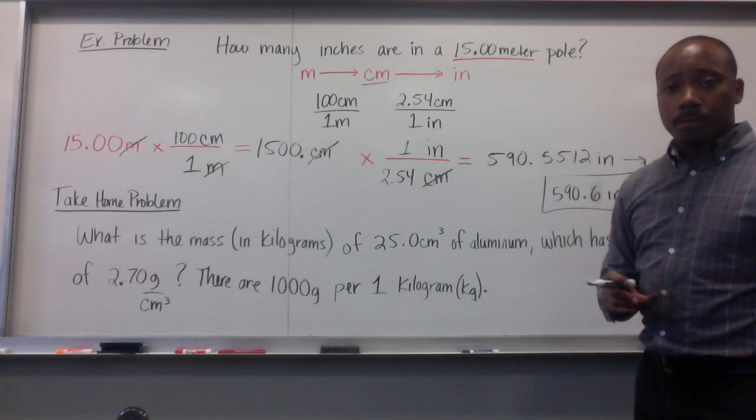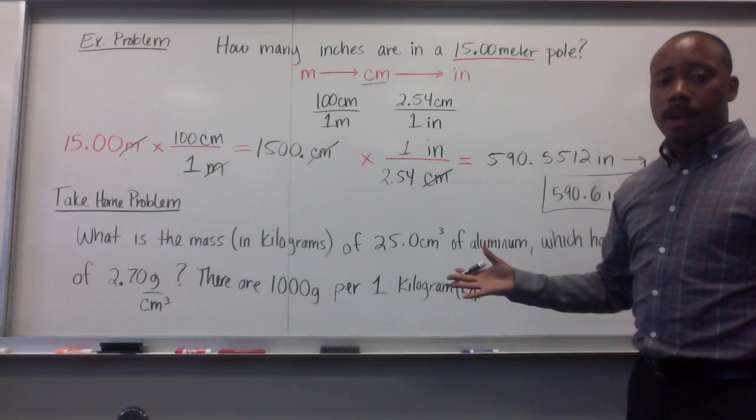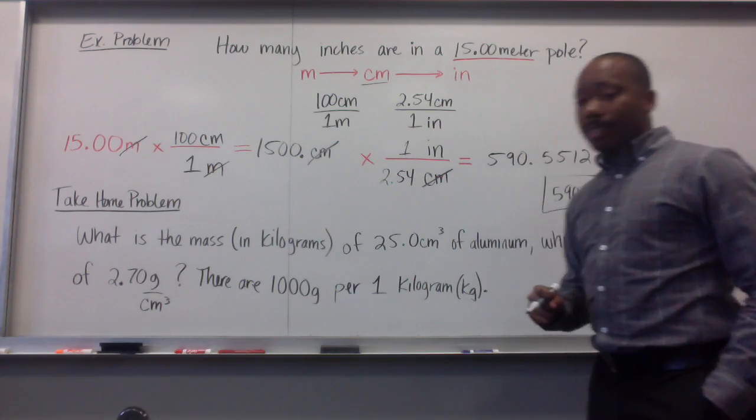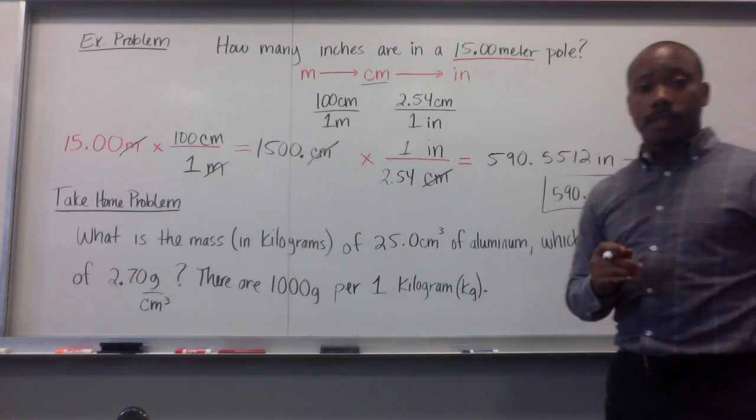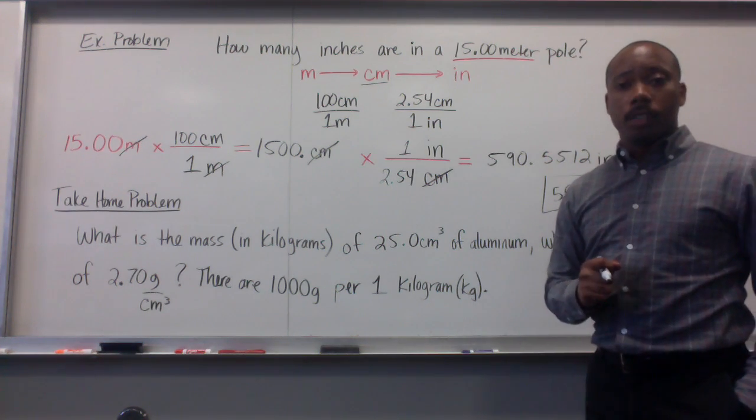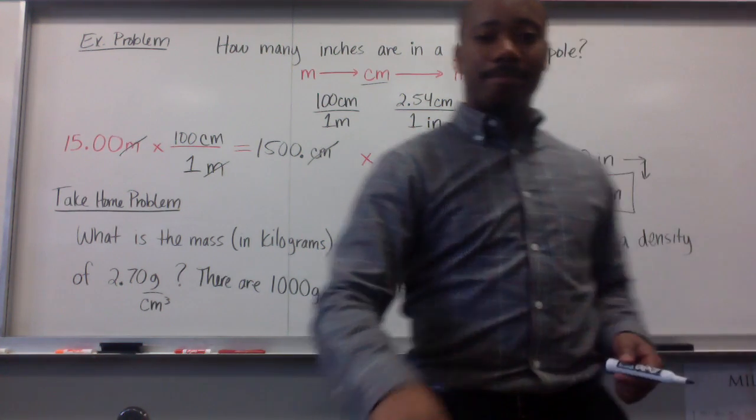Here's a take-home problem for you. After you've written these notes, try this problem out. What is the mass in kilograms of 25.0 cubic centimeters of aluminum, which has a density of 2.70 grams per cubic centimeter. There are 1,000 grams per 1 kilogram. Good luck, gentlemen. Take notes.